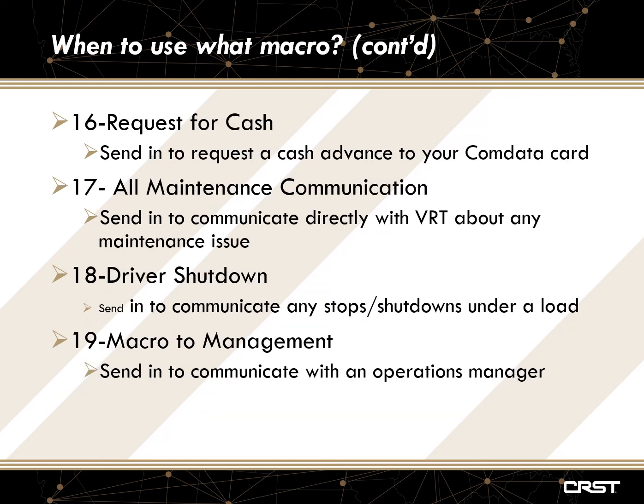On this slide, I'm going to discuss the driver shutdown macro. This impacts you directly in terms of getting to your final. Anytime you are stopping, the load is going to be delayed slightly, and we want to communicate those delays to our customer. For example, if a load is a live unload and you arrive at the final only to find out that your delivery was two days ago because you had a shutdown due to weather, you now have to sit there and wait until they can either work you in or have dispatch reschedule the appointment. If you had communicated that driver shutdown to us in advance, we can work with our customer to get that appointment rescheduled so when you arrive, you can unload and head directly to your next load.